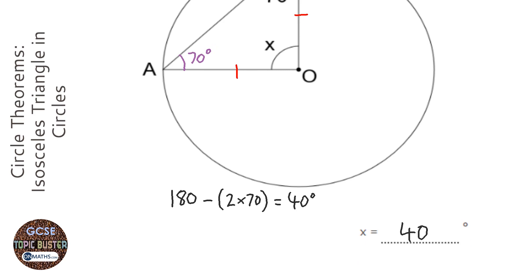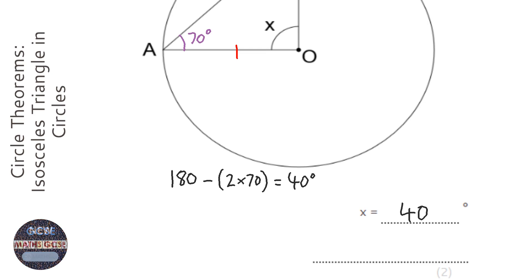Now not only do we need to write down the answer, it's really important we write down the reason why, and you just say isosceles triangle.